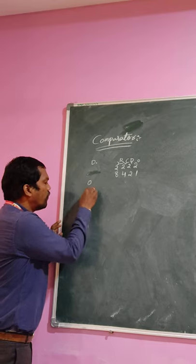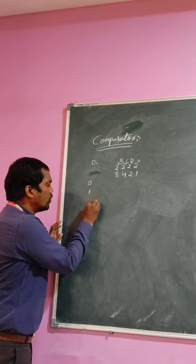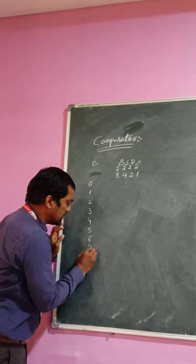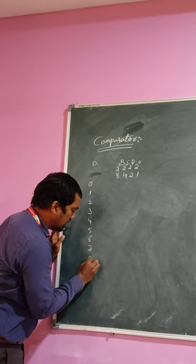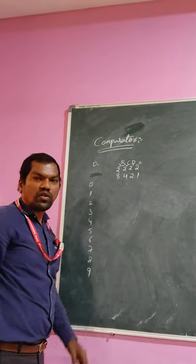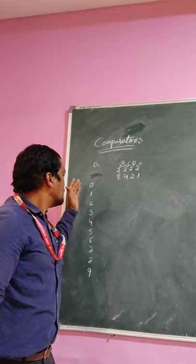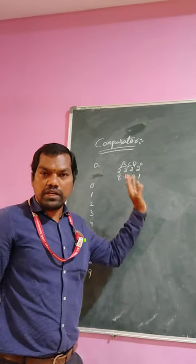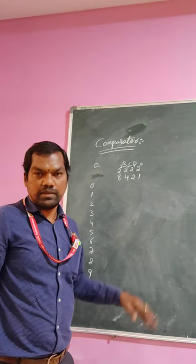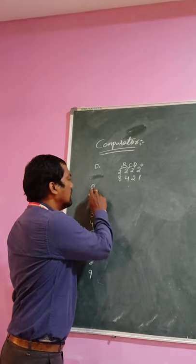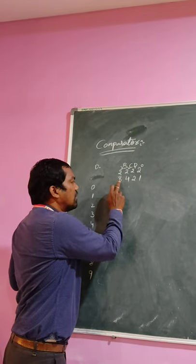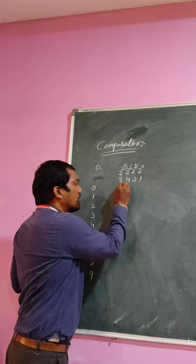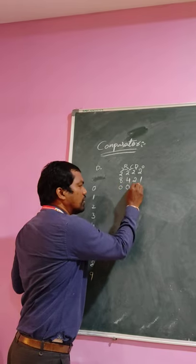Here 0, 1, 2, 3, 4, 5, 6, 7, 8, 9 — we already know that, decimal numbers 0 to 9. How we can convert that into BCD? For decimal 0, this number is 0, so all bits become 0.